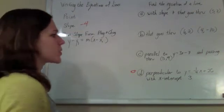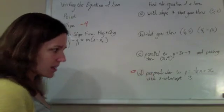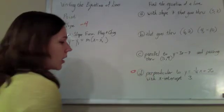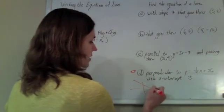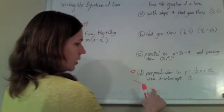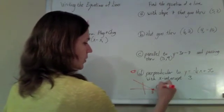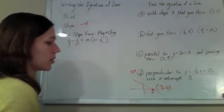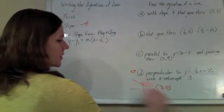But then they didn't hand us a point. They told us that the x-intercept is 3. Well, I know that if my line crosses the x-axis at 3, that point should be the point 3, 0. Didn't go up any on the y. It's sitting on the x-axis.